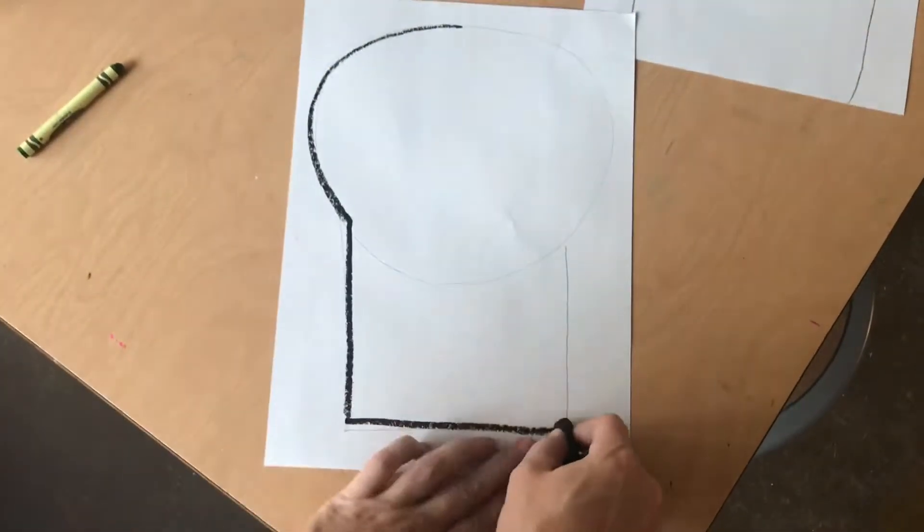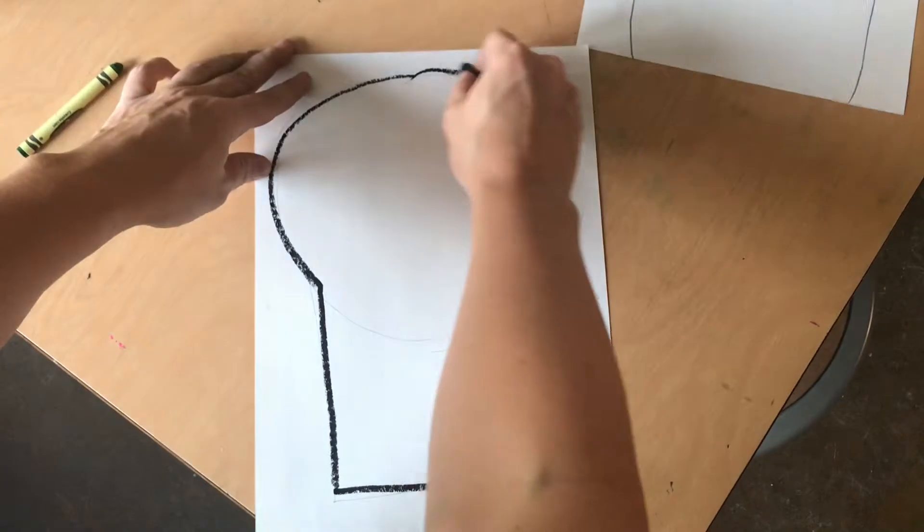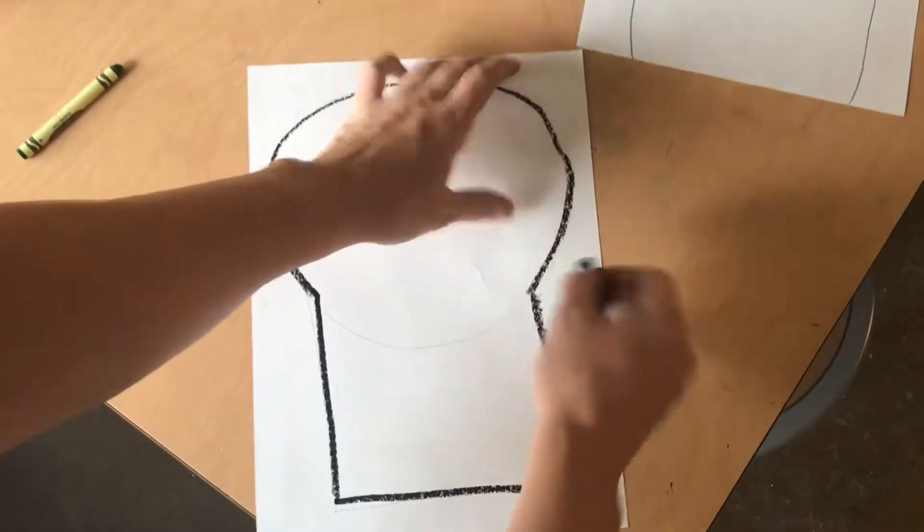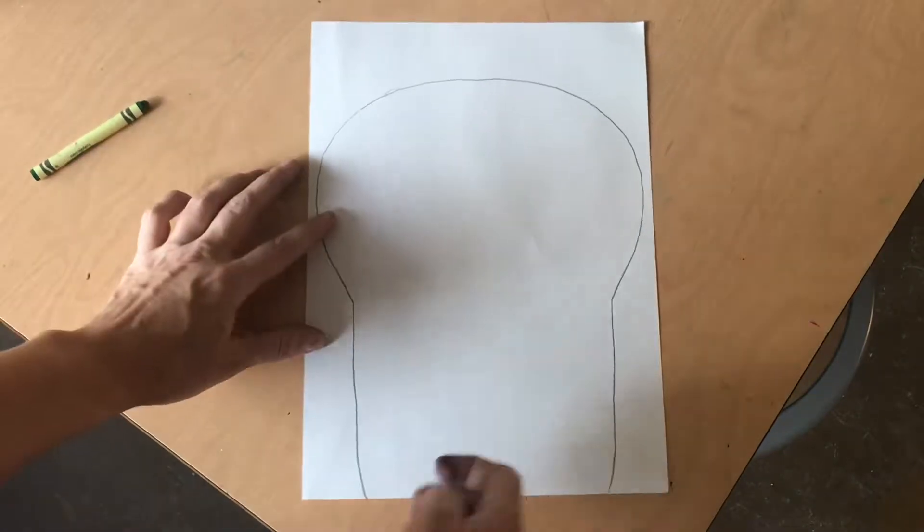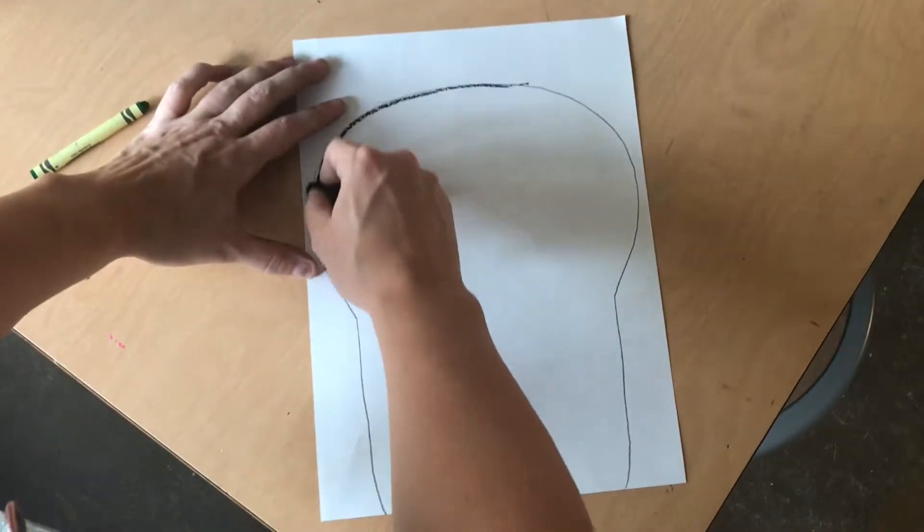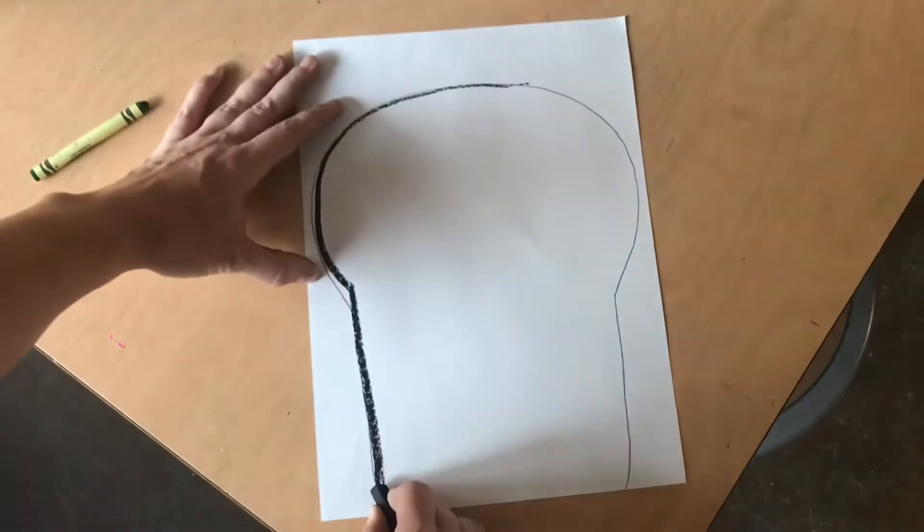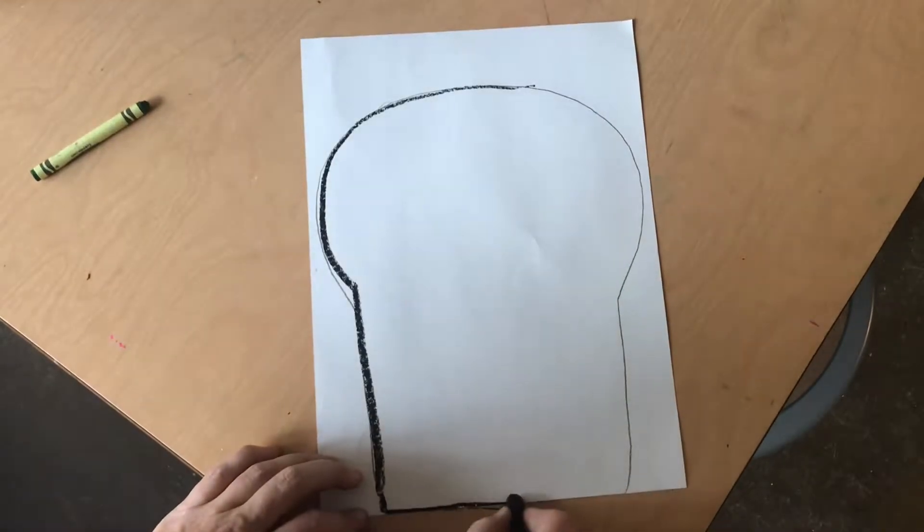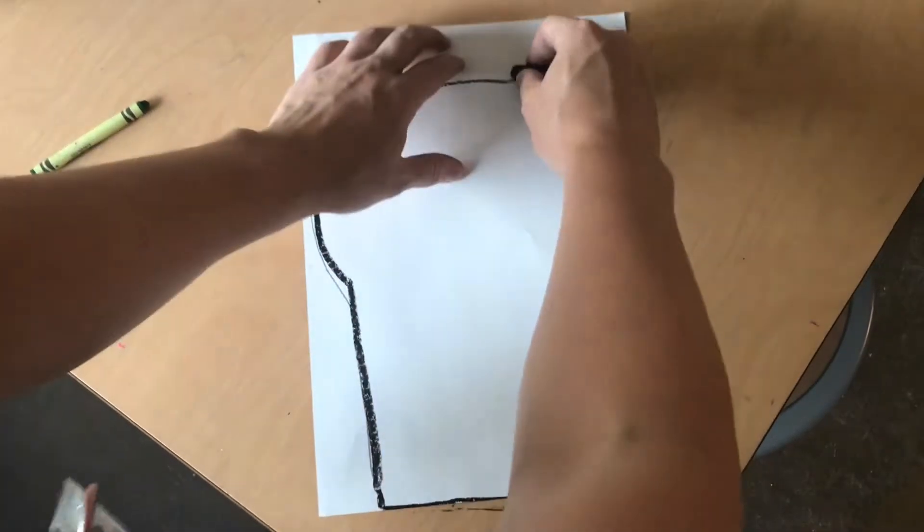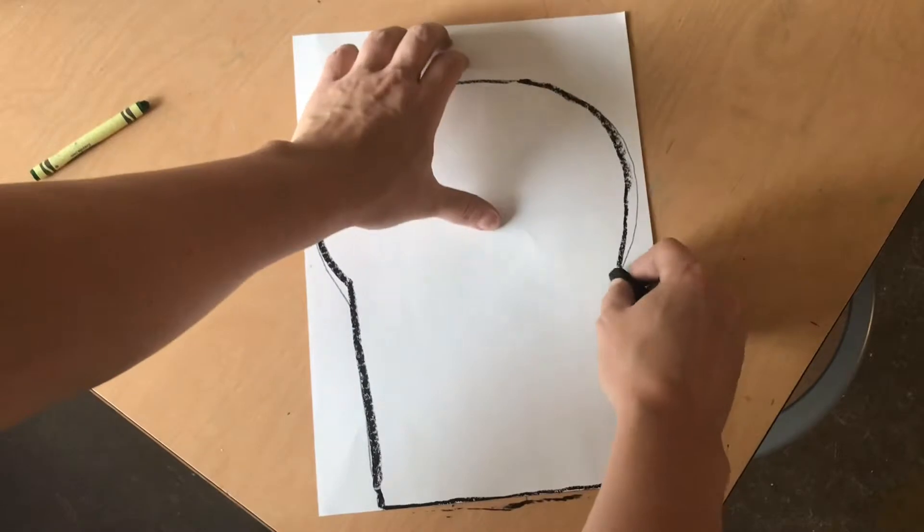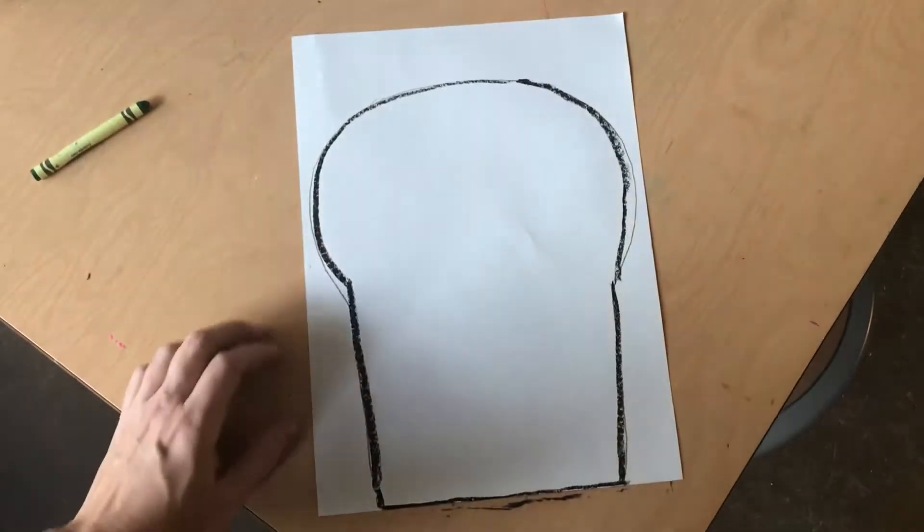So once you trace you can go around the outside with a dark crayon, and here I am again outside with a dark crayon. And that one's all the way at the bottom so I did the black line at the bottom.